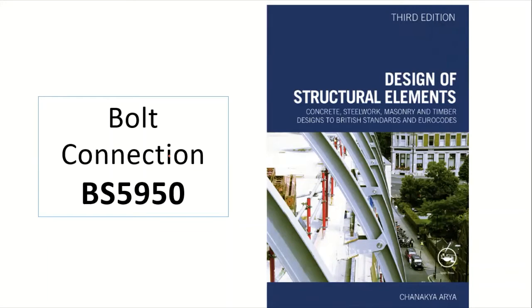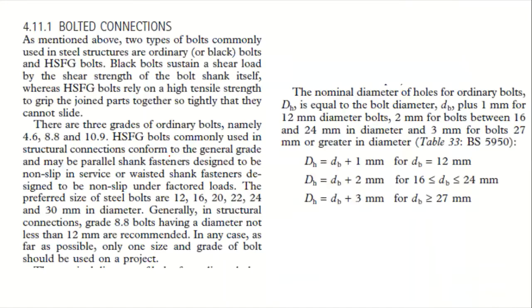In the design of the bolt connection, there are a few things to take note of. For example, the diameter of the hole is the diameter of the bolt plus one millimeter. So if the bolt diameter is 12mm, you add 1mm, and so on.